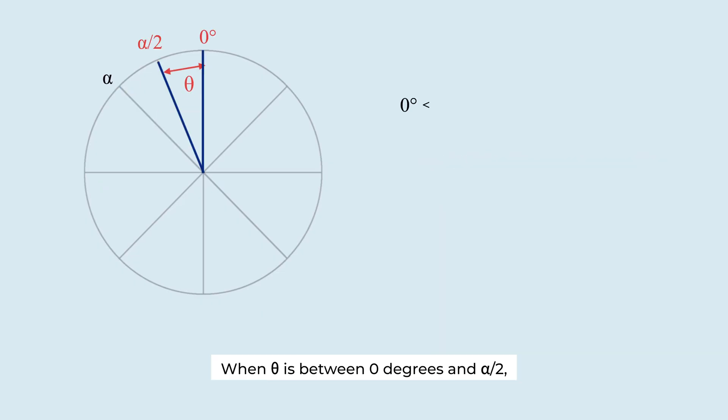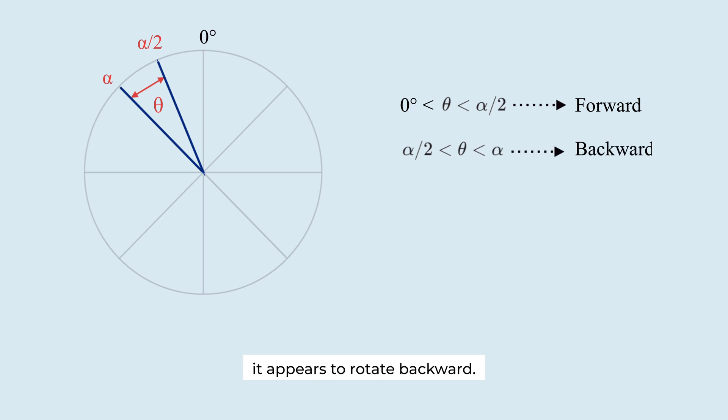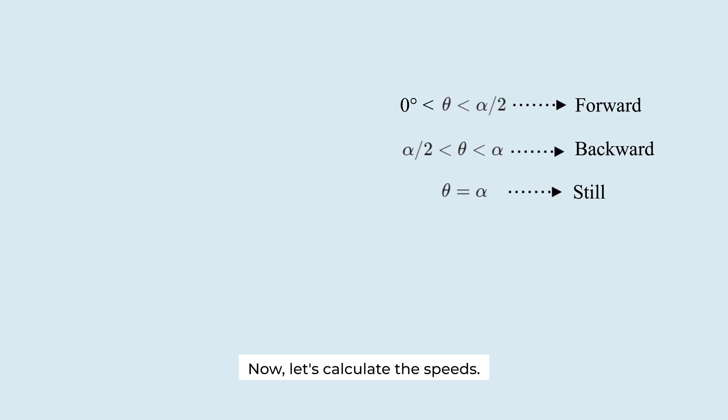When theta is between 0 degrees and alpha over 2, the wheel appears to rotate forward. But when theta is between alpha over 2 and alpha, it appears to rotate backward. When theta equals alpha, it looks still. Here, alpha over 2 is special because it is exactly the point where perceived direction of rotation flips.